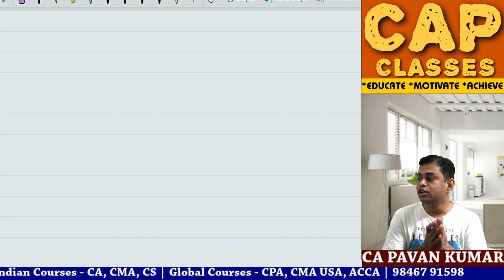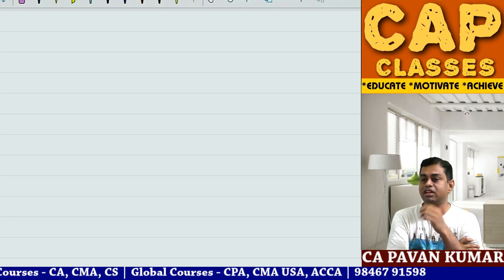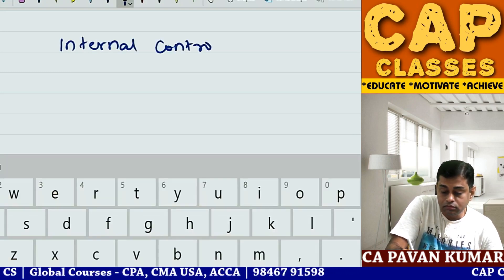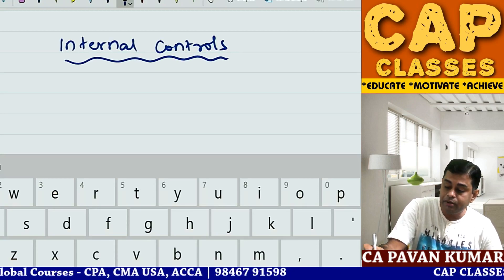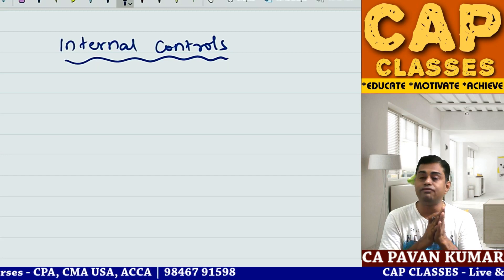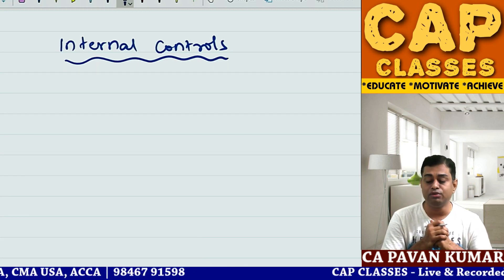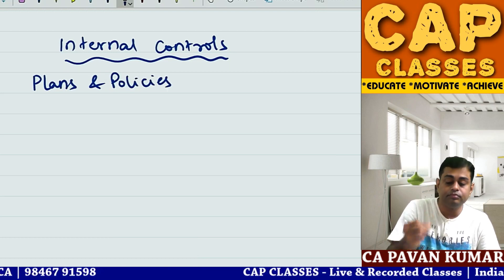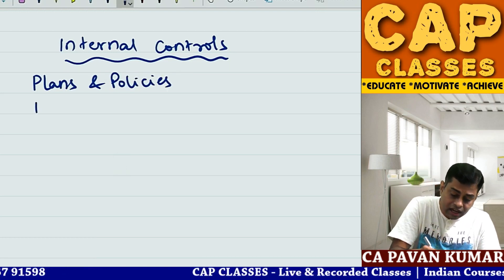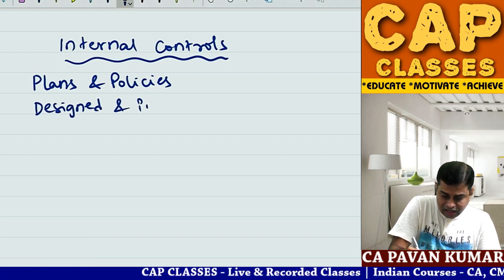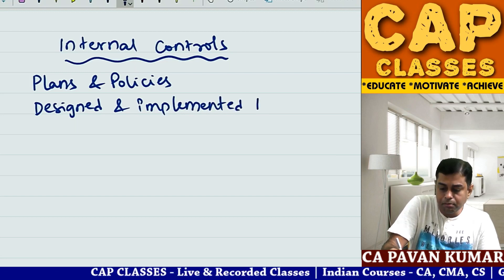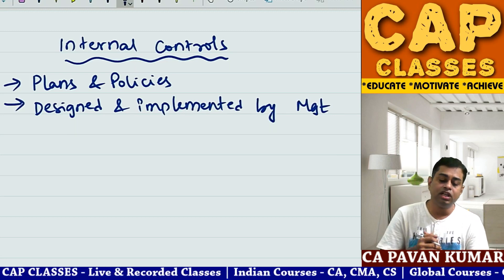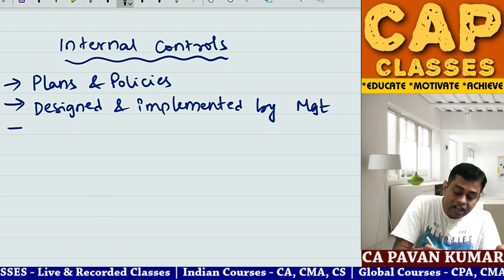Hello friends, good evening. I'm here for another session on our internal controls topic. A very quick summary: internal controls are nothing but plans and policies that are designed and implemented by the management of an enterprise to achieve certain objectives.